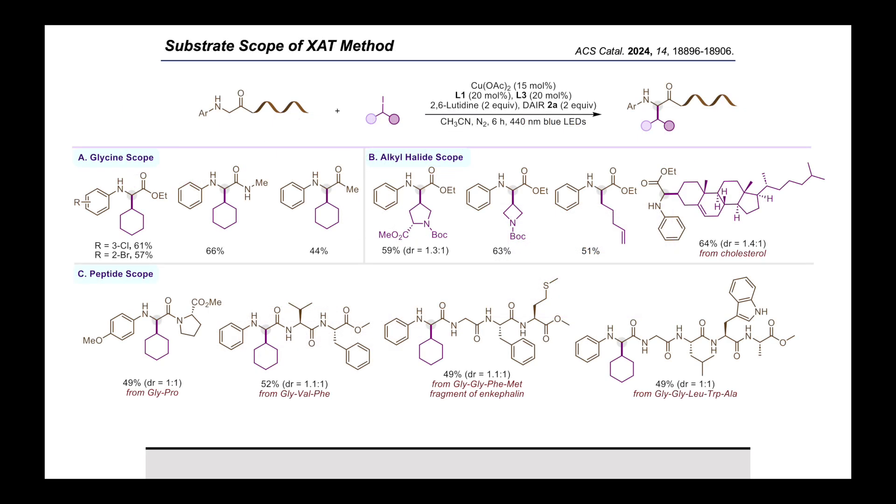Then we explored the scope of the JART method. Delightfully electronically diverse glycine derivatives and diverse sets of acyclic and cyclic secondary or primary alkyl iodides were well-accommodated in this transformation, leading to their corresponding products in moderate to excellent yields. Biologically active alkyl iodide derivatives like cholesterol were also well-participated in this reaction. Finally, we extended this method to the site-selective alpha-alkylation of dipeptide, tripeptide, and long-chain peptides. In all the cases, the reaction worked well and delivered the corresponding glycine-selective alkylated products in moderate to good yields.